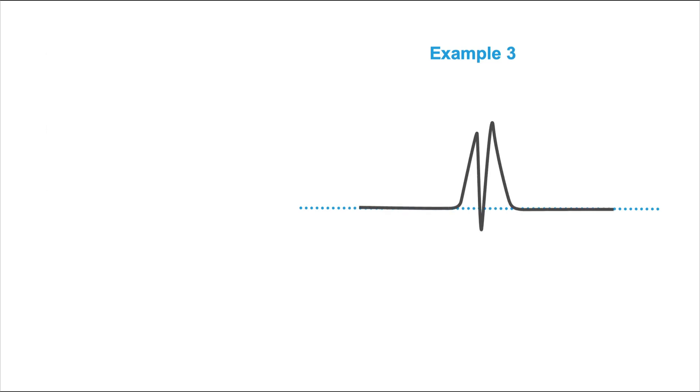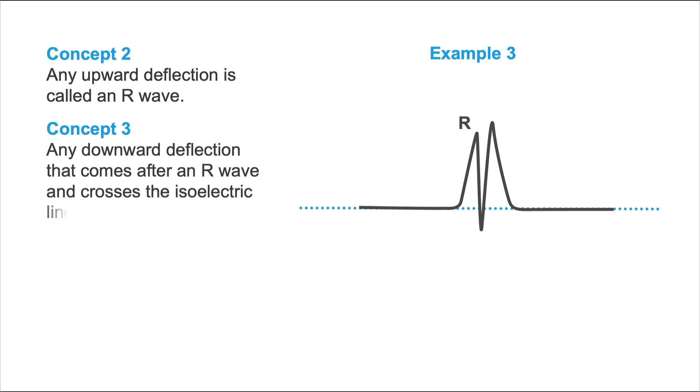Now let's turn to example number three. What I'd like you to do here is pause the video and try it out for yourself. Then come back and see how you did. Okay, so now let's see how you did. According to concept number two, any upward deflection is called an R-wave. According to concept number three, any downward deflection that comes after an R-wave and crosses the isoelectric line is called S-wave. And according to concept number four, a second upward deflection is called R-prime. So we have an RSR-pattern or RSR-prime pattern. Did you get it right?